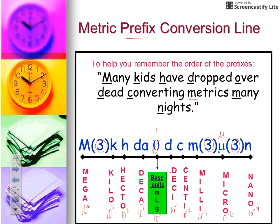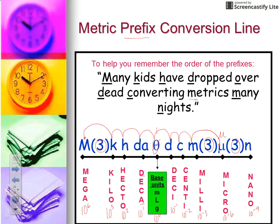Here's how we use the metric conversion line. If you were converting from megagrams all the way to nanograms, you'd place your pencil on mega and hop letter to letter — moving your decimal one place per hop. When you jump over a 3, that counts as 3 places. So from mega to nano, you count: 3, 4, 5, 6, 7, 8, 9, 10, 11, 12, 13, 14, 15 — you would move your decimal 15 places to the right.